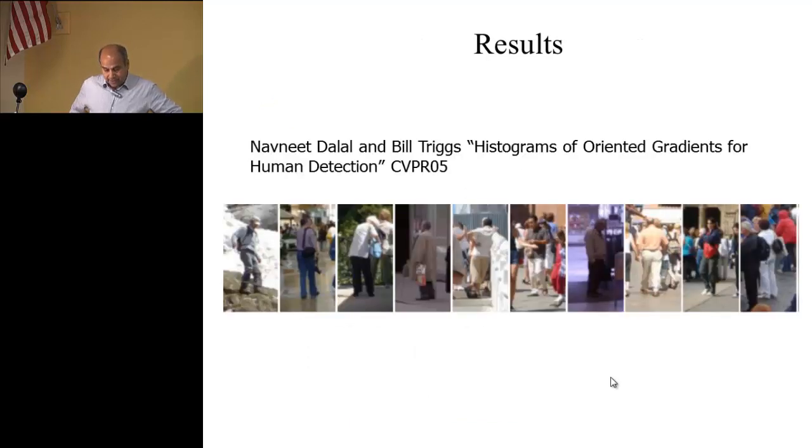These will be the typical images where this method will work. So it will detect there's a human, there's a human, there's a human, and so on. In some cases, when there's occlusion, it will have some problem. But this has become very popular to use HOG as a descriptor.